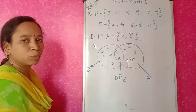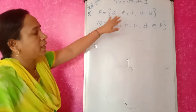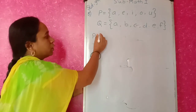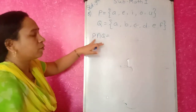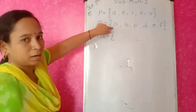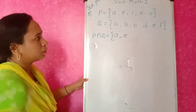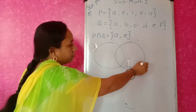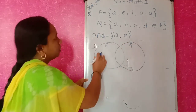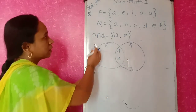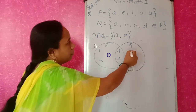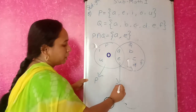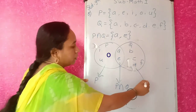Third example: P elements are {A, E, I, O, U} and Q's elements are {A, B, C, D, E, F}. I have to write P ∩ Q. Intersection is the set of common elements. The common elements are A and E. Using a Venn diagram: A and E go in the common middle part, the remaining P elements O, U go on P's side, and B, C, D, F go on Q's side. This is P ∩ Q.